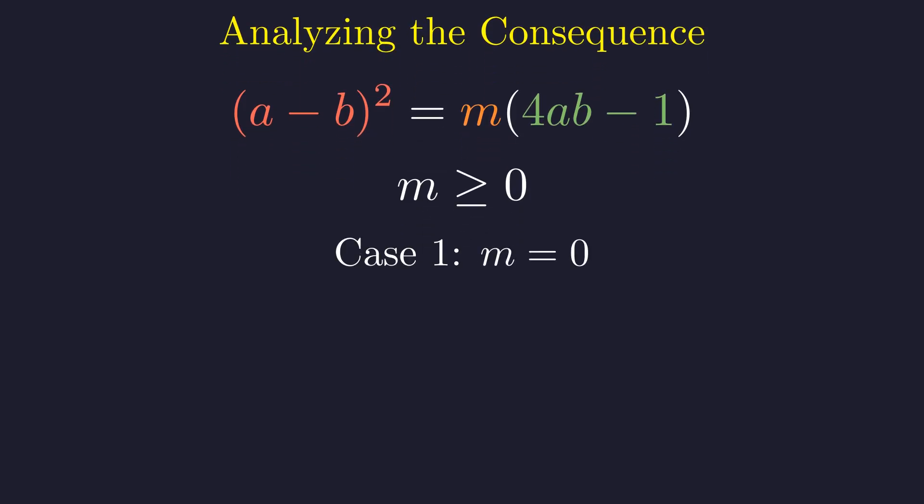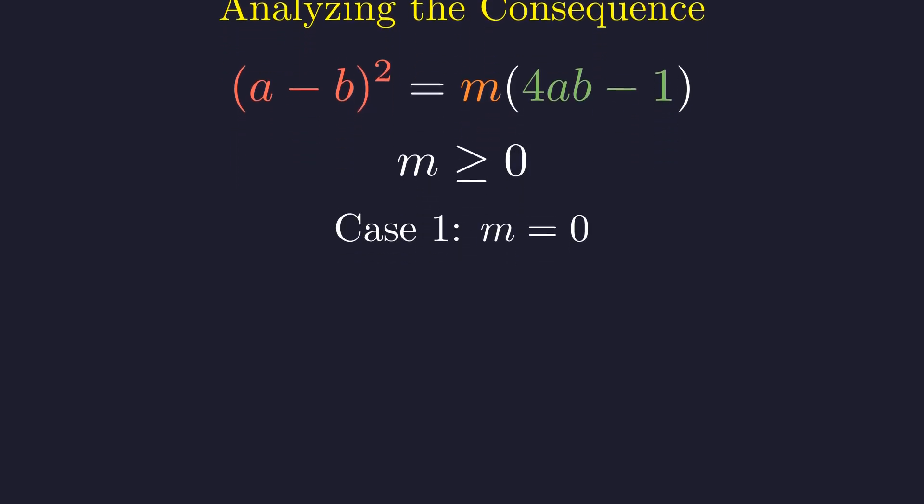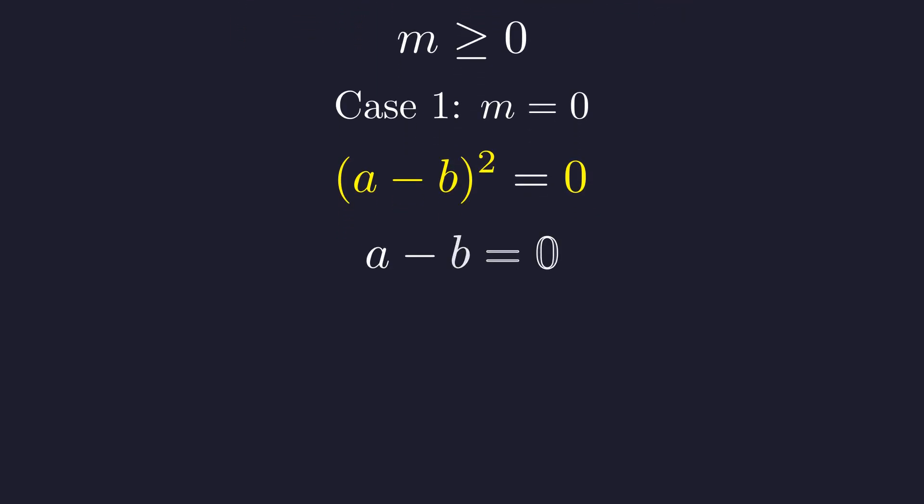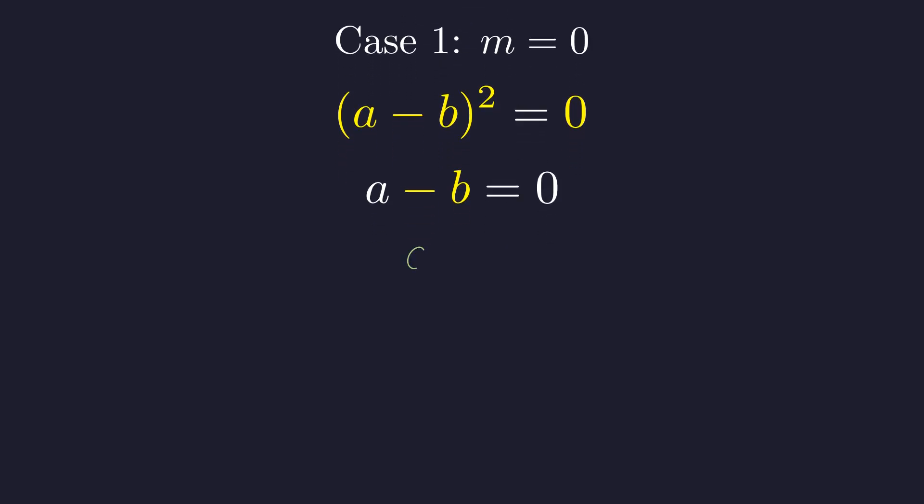First, we consider the case where M equals 0. If M is 0, then the square of A minus B must be 0. The only real number whose square is 0 is 0 itself. Thus, we can take the square root of both sides. This implies that A minus B is equal to 0. To isolate A, we add B to both sides of the equation. This leads directly to the conclusion that A equals B. To complete the proof, we must show this is the only possibility by demonstrating that M cannot be positive.